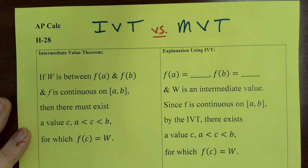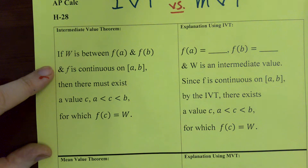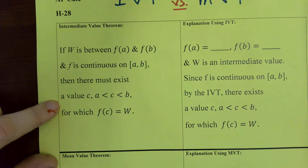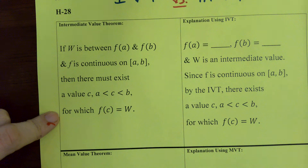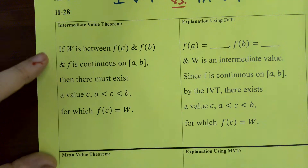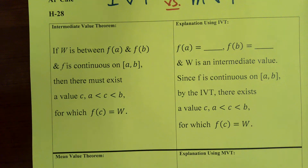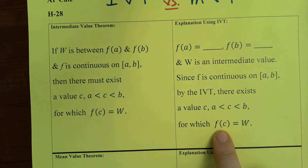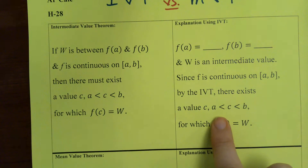The intermediate value theorem: if W is between F of A and F of B, and F is continuous on the closed interval AB, then there must exist a value C between A and B for which F of C equals W. Over here is how we would format an explanation using the intermediate value theorem to prove or explain why a continuous function takes on a certain output value on the given interval.